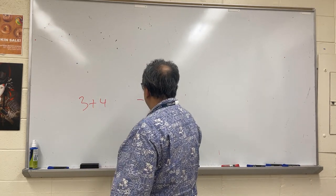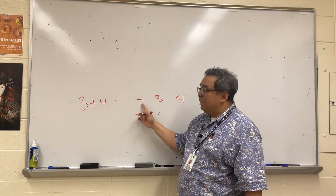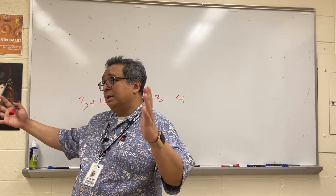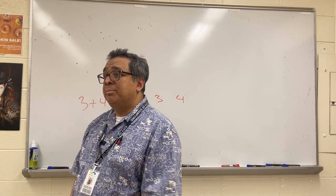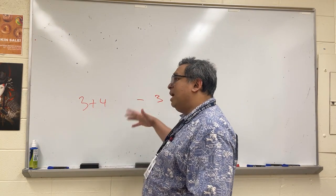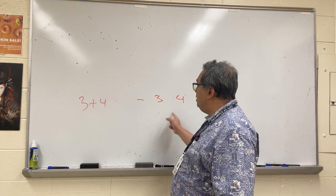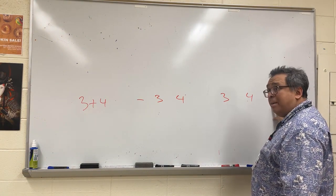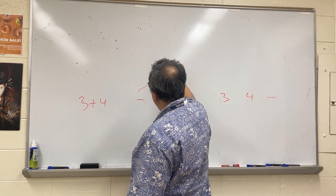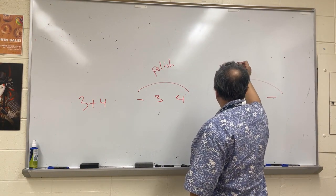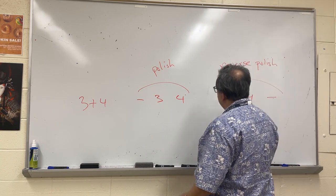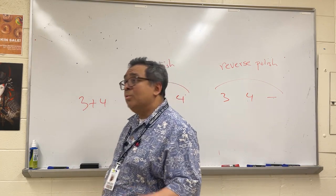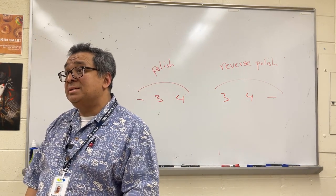One way is where we put the operator first and the operands afterwards. This was developed by a mathematician in Poland who had a long complicated last name, so people just started calling it Polish notation. Then later on, another group of scientists came along and said this is good, but this is even better — where we write the operands first and then the operator. This is known as reverse Polish notation. On either of these, we wouldn't need PEMDAS anymore, and we wouldn't need parentheses anymore, because there is no longer any ambiguity.